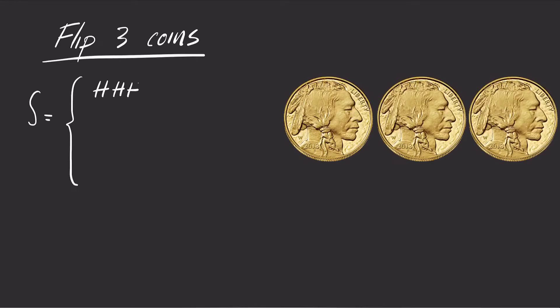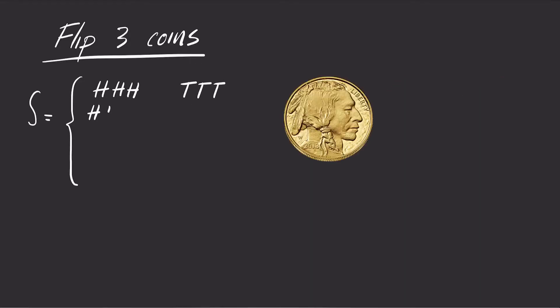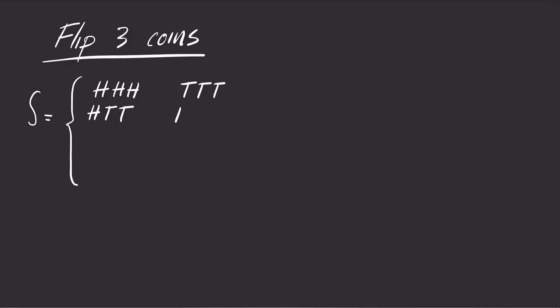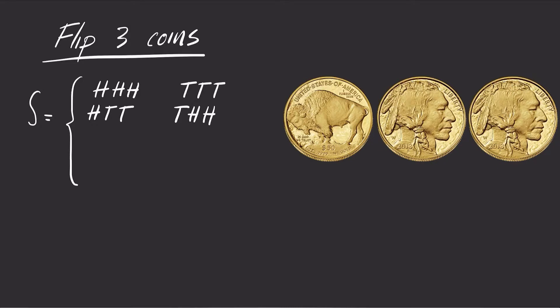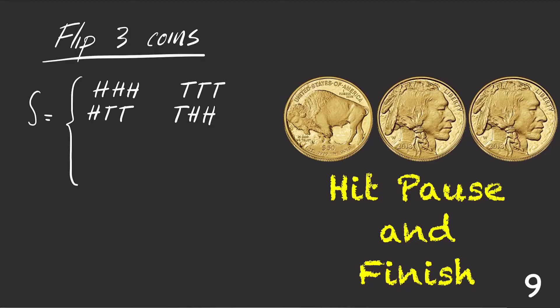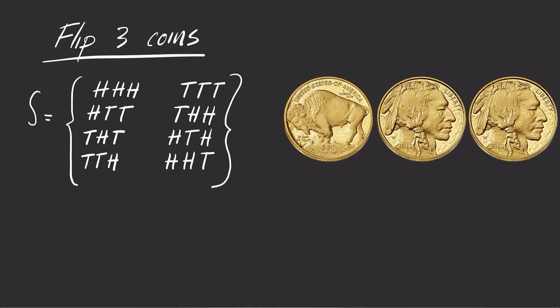If you flip three coins, you might get all heads or all tails. You could also get heads only on the first flip, or tails only on the first flip. By listing all possible outcomes in the sample space, we can see that the number of all possible outcomes is 8.